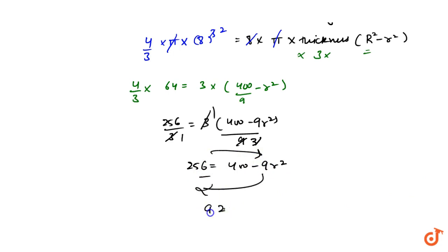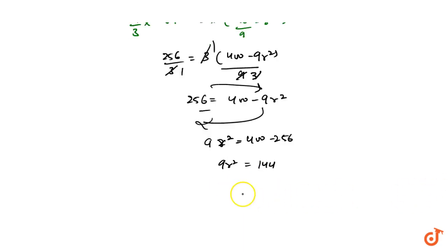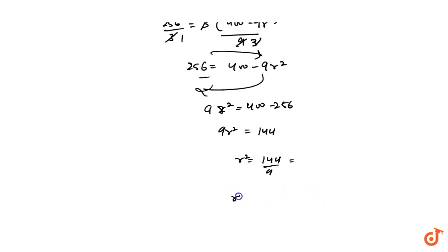9 r square equals 400 minus 256. 400 minus 256 will be equal to 144. So 9 r square equal to 144, or r square equal to 144 upon 9. That is 44, 12 square, then 9, 3 square, so it will be 4.